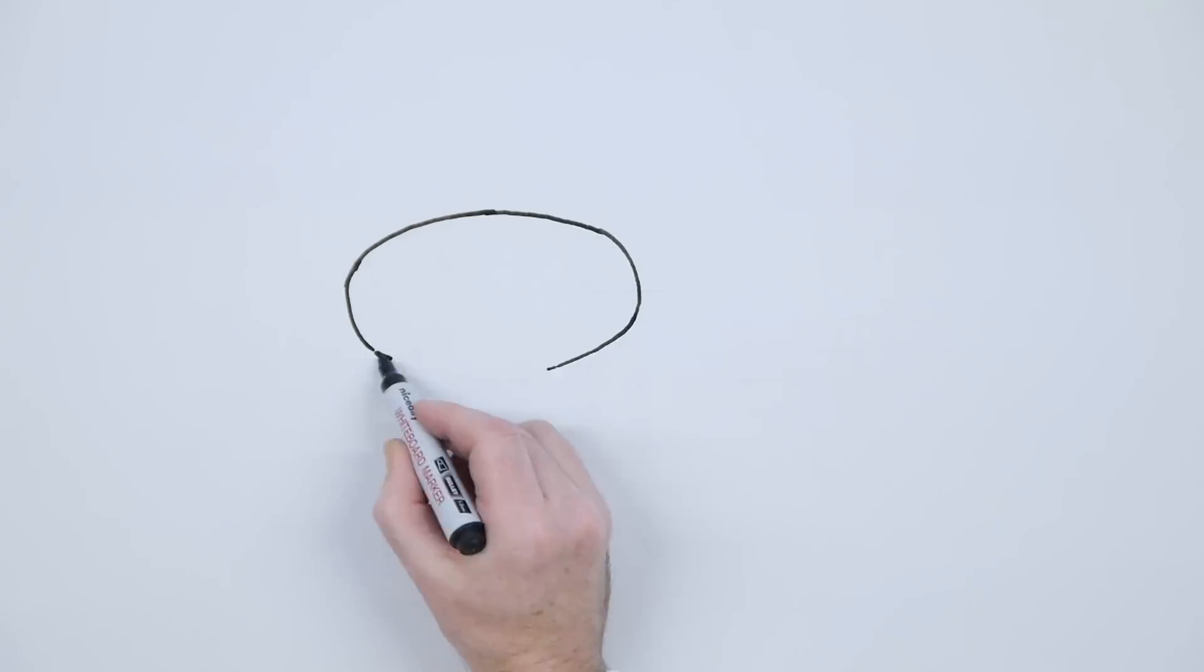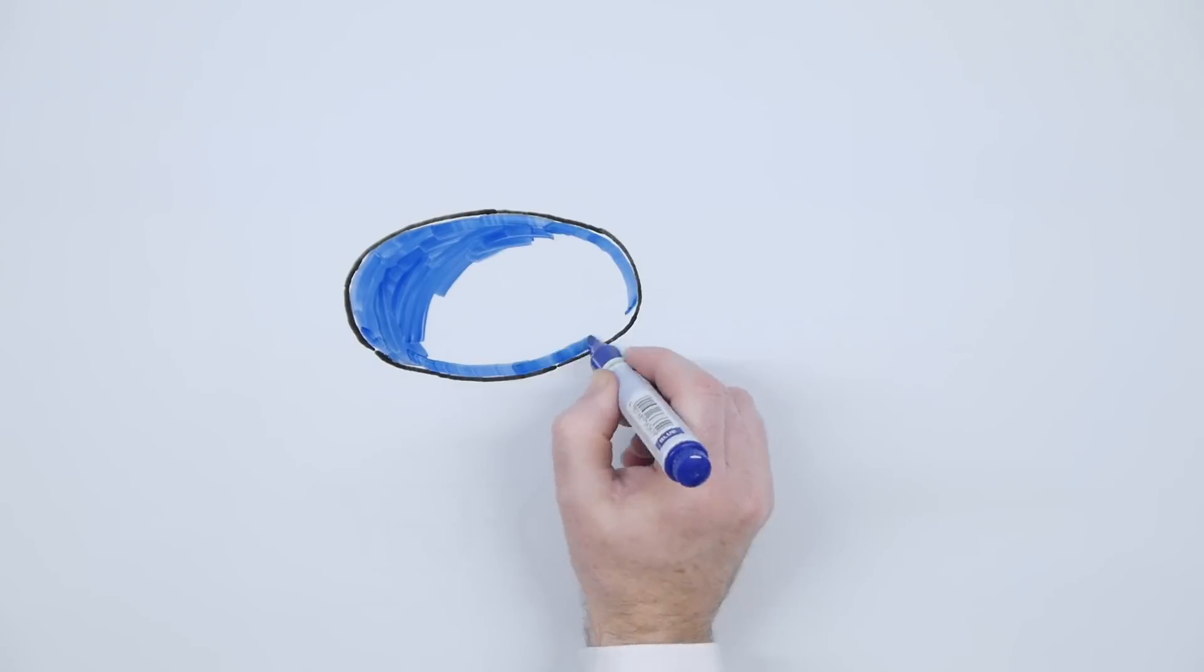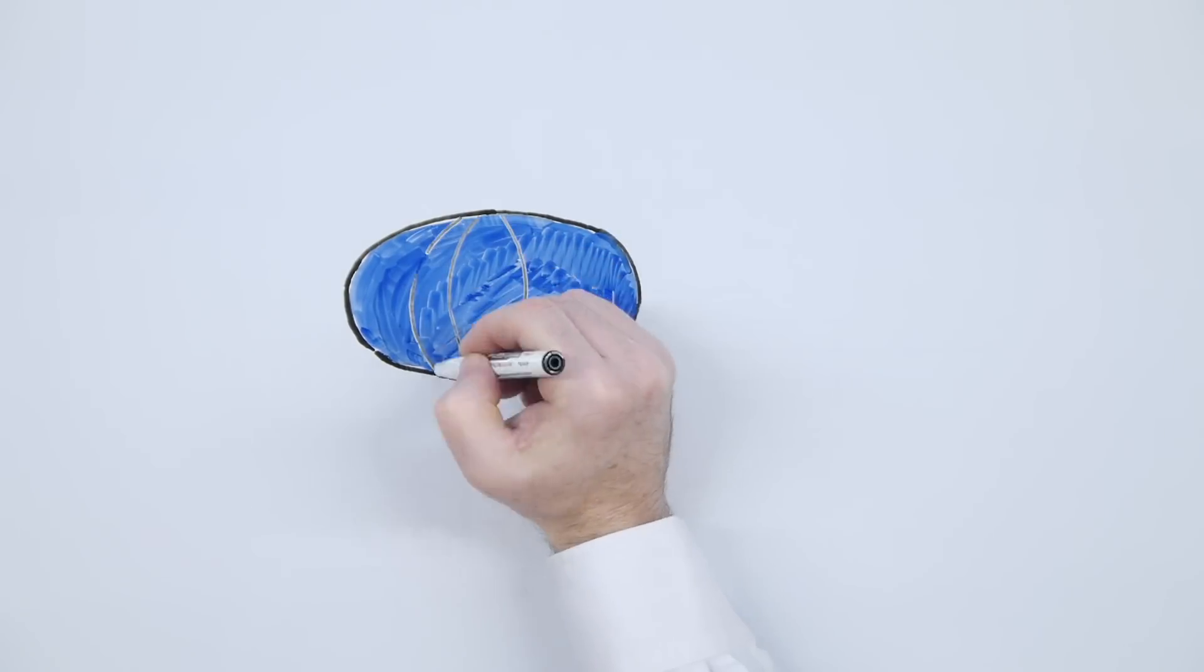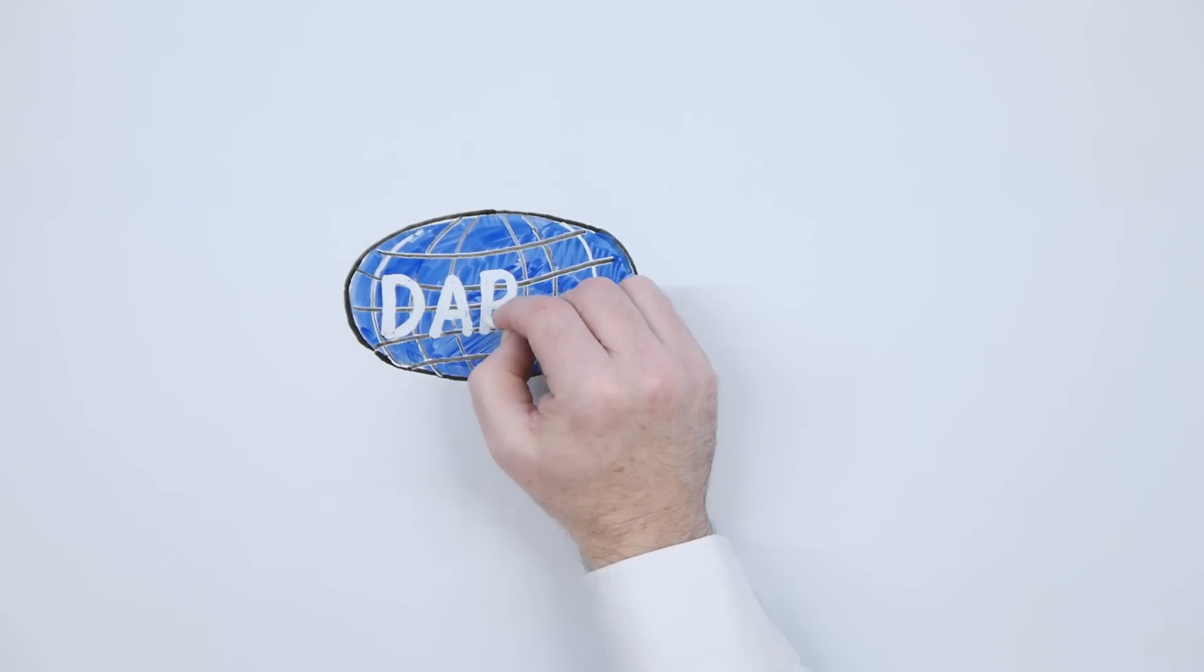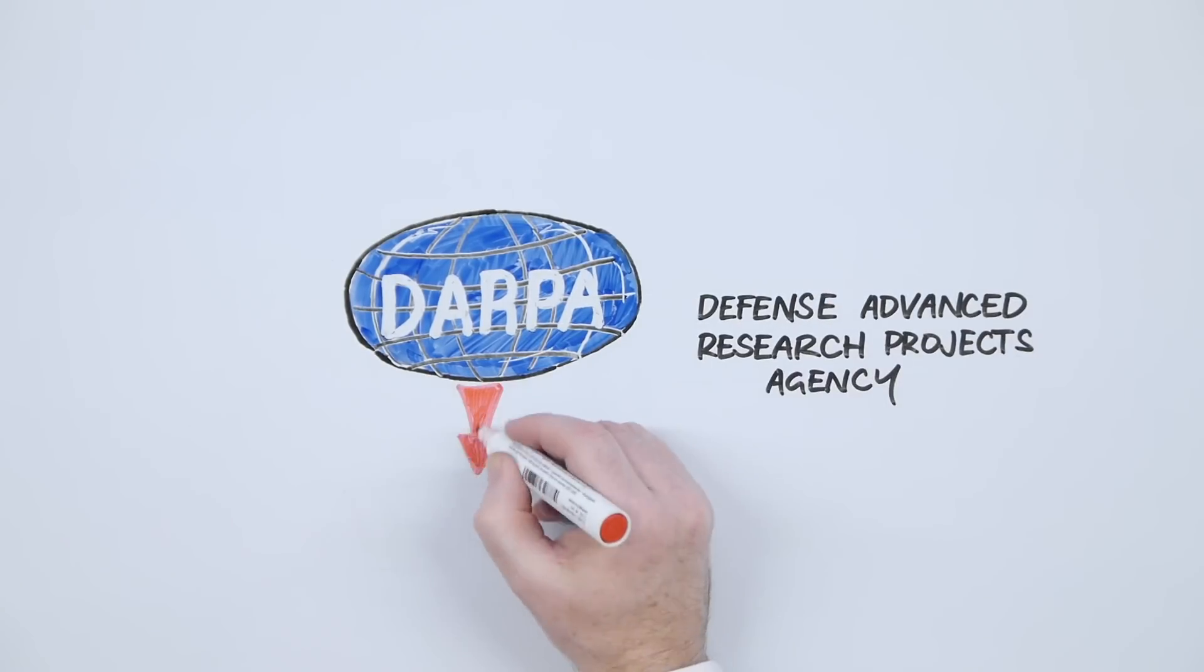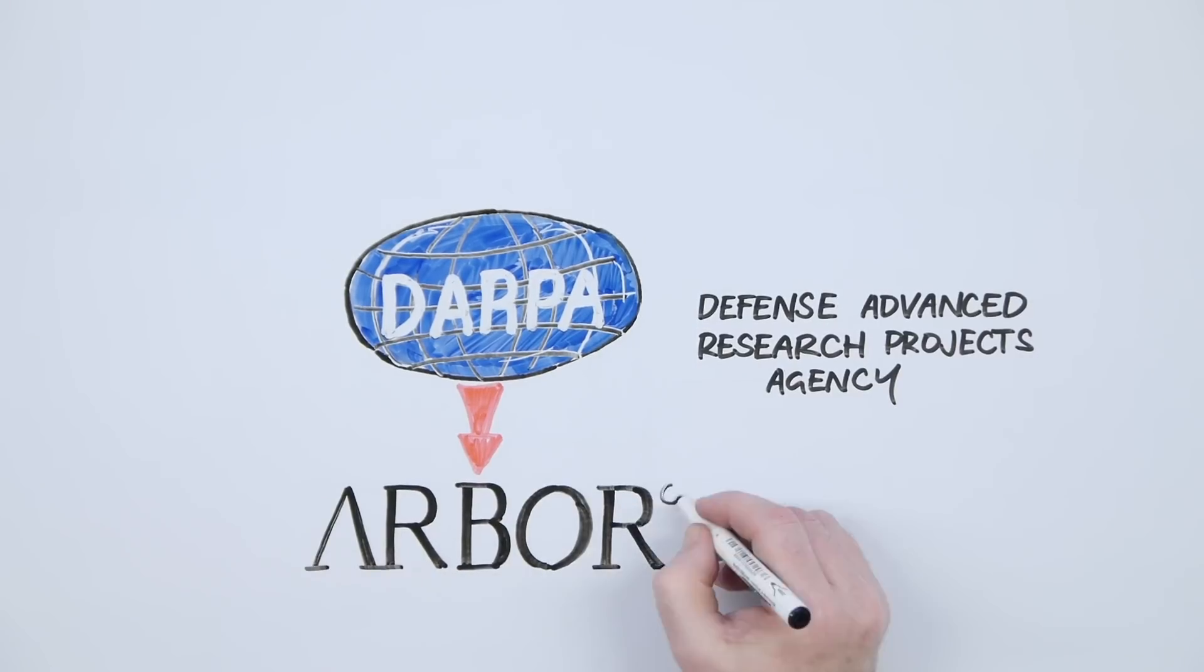So how did we get here? The year was 1999, and a groundbreaking research project on distributed network traffic anomalies was conducted at the University of Michigan. This led to DARPA funding and the creation of Arbor Networks in 2000.